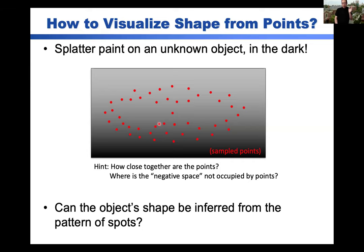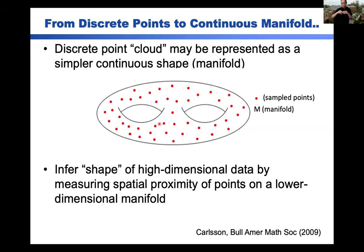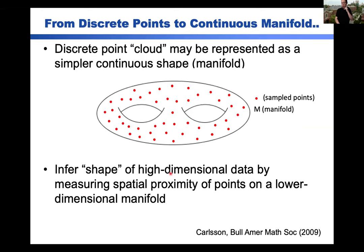In a more mathematical setting, what we'd like to do is go from some discrete cloud of points and interpret this as a simpler continuous shape — basically a manifold in lower-dimensional space. So we'd like to take high-dimensional data sets, infer the shape of this data more quantitatively by measuring the spatial proximity of these points, and hopefully they all reside in this lower-dimensional manifold. There's interesting information included in how this occurs. You can imagine a very high-dimensional space like gene expression where similar ideas would be relevant.